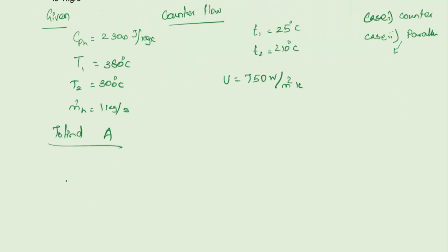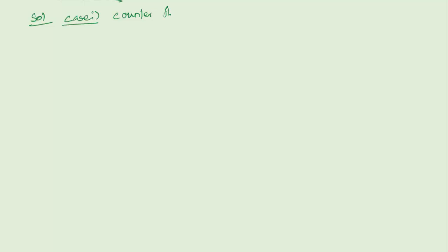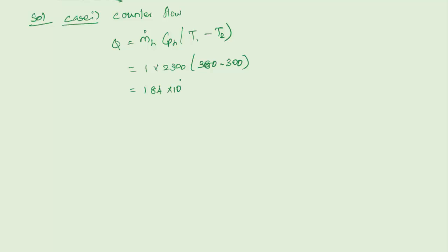Solution, Case 1: Counter flow. Using Q equals m_dot_h · Cp_h · (T1 - T2): Q equals 1 × 2300 × (380 - 300) equals 184 × 10³ W. The mass flow rate of the cold fluid is not given, so we use the hot fluid formula to find Q.